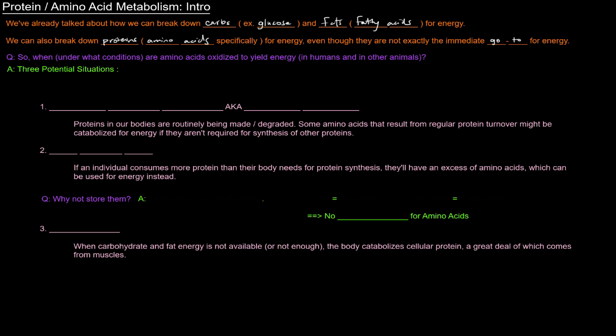So when though? Under what conditions are amino acids oxidized to yield energy in humans and in other animals? There are three potential situations. The first one being normal protein turnover, also called protein recycling. Proteins in our bodies are routinely being made and degraded. Some amino acids that result from that regular protein turnover might be catabolized for energy if they're not being used for the synthesis of other proteins.